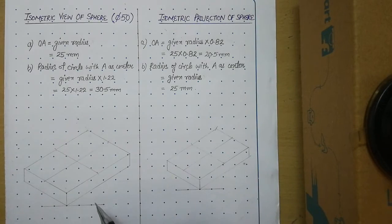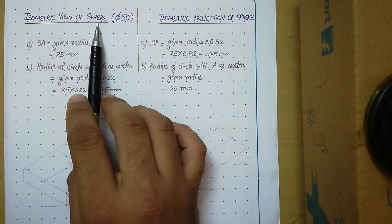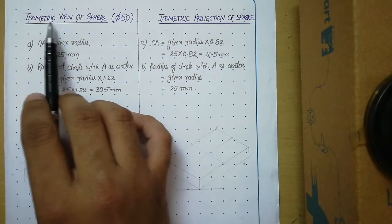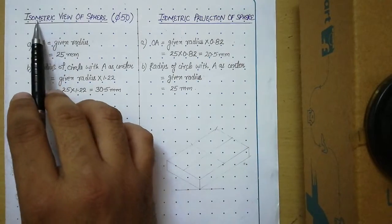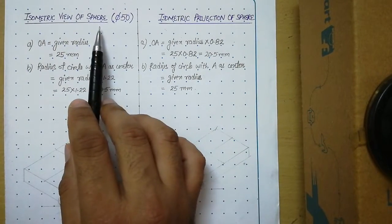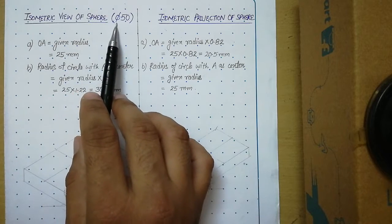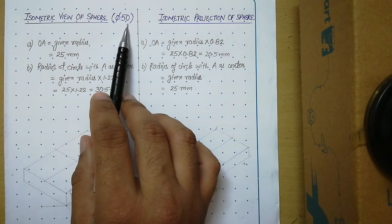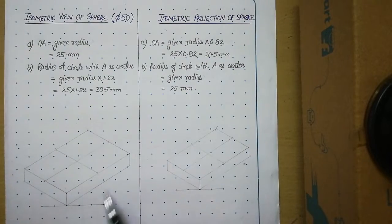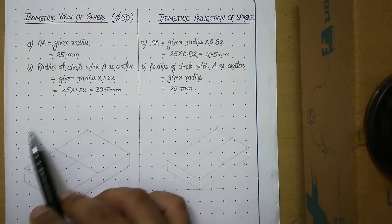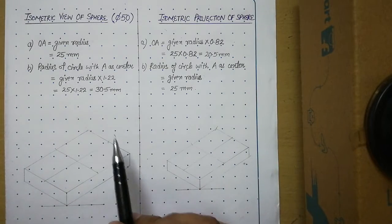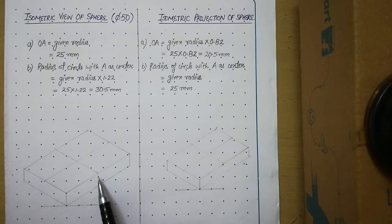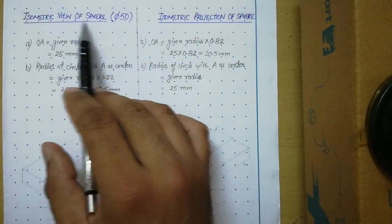Hello students, today we will talk about sphere. We will learn how to draw the isometric view of a sphere and the isometric projection of a sphere. To understand these two views, let us assume a question: a sphere of diameter 50 mm is resting centrally on top of a rectangular block. First step is to draw the isometric of the rectangular block, which has been made with its center located. On top of this block, we will draw the isometric view of the sphere.